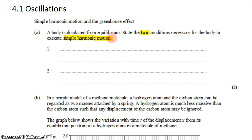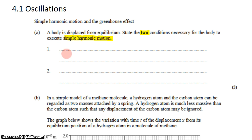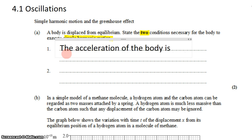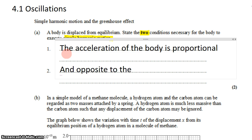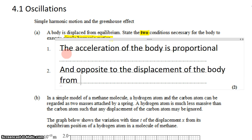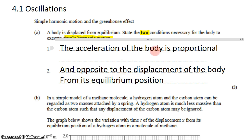This is a question on the definition of simple harmonic motion and how its properties are determined. For simple harmonic motion, there are two key founding properties: the acceleration of the body is proportional and opposite to the displacement of the body from its equilibrium position. The further away it is from equilibrium, the larger the acceleration, and it opposes the displacement — if you pull it up, acceleration is down; if you push it down, acceleration is up.